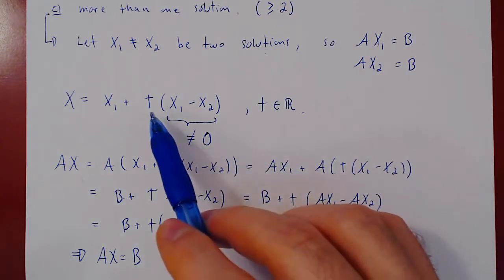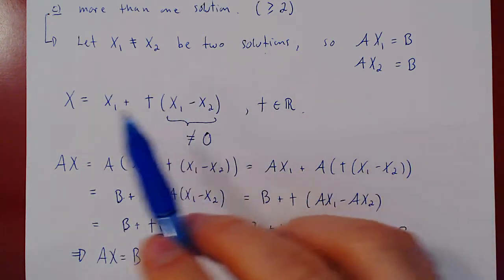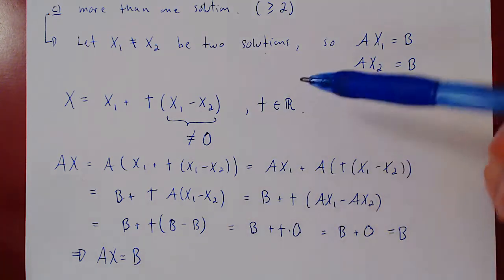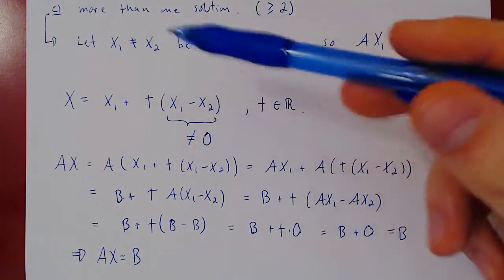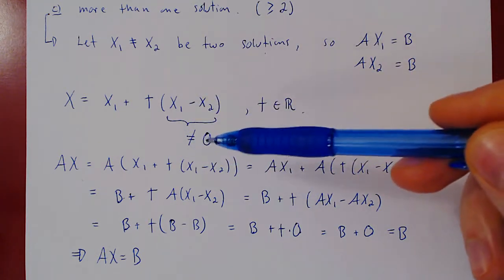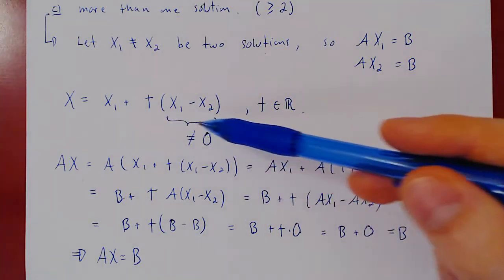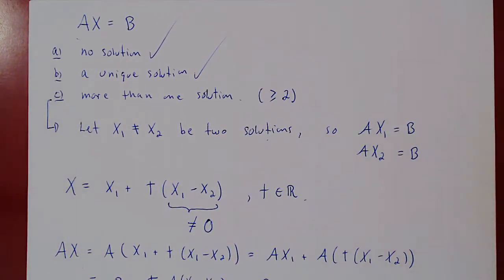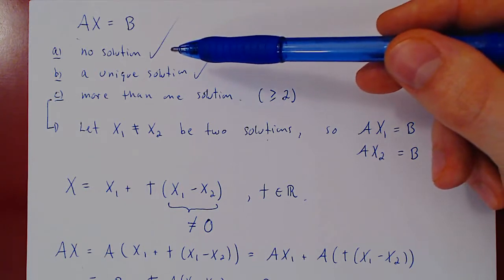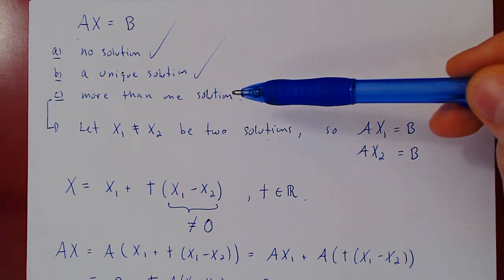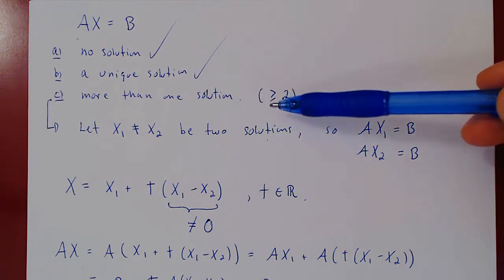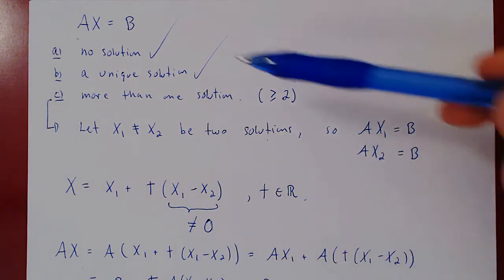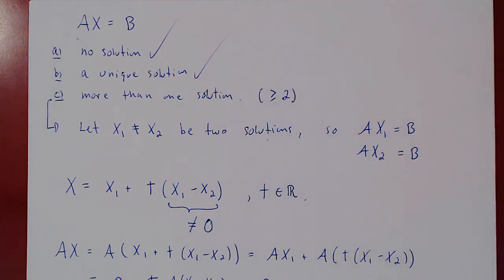For any choice of t, the column matrix x1 plus t times (x1 minus x2) is a solution to the equation A times x equals b. And as previously stated, since x1 and x2 are different, x1 minus x2 is not the zero column matrix, so as we let t vary over all real numbers, this gives us an infinite number of different solutions. So we now have the following statement: a system either has no solution, or a unique solution, or two or more solutions — but if we have two or more solutions, we can easily construct an infinite number of different solutions. This proves that a system either has no solution, a unique solution, or an infinite number of solutions.